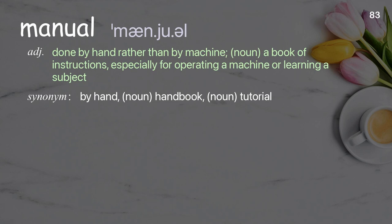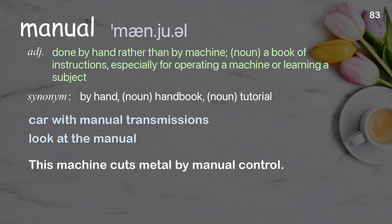Manual: done by hand rather than by machine; noun, a book of instructions, especially for operating a machine or learning a subject. Examples: car with manual transmissions, look at the manual. This machine cuts metal by manual control.